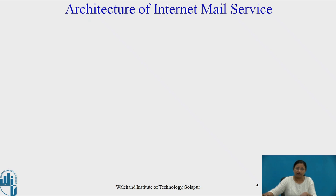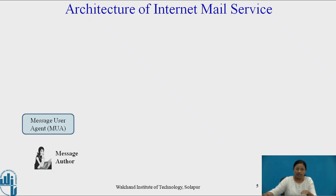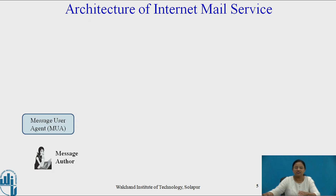Let us see the internet mail service architecture in detail. There is a source user and a destination user. The source user wishes to send a message to the destination user. The message author is the source author. The message is prepared by the message author, and the message user agent plays an important role on behalf of the message author. The MUA operates on behalf of user actors and user applications — it is their representative within the email service. Typically this function is housed in the user's computer and is referred to as a client email program or a local network email server.